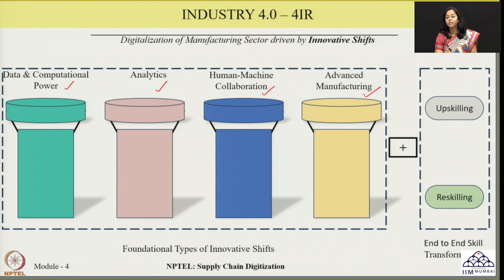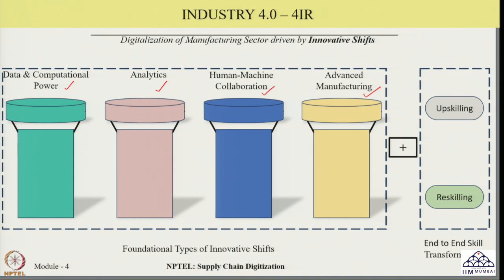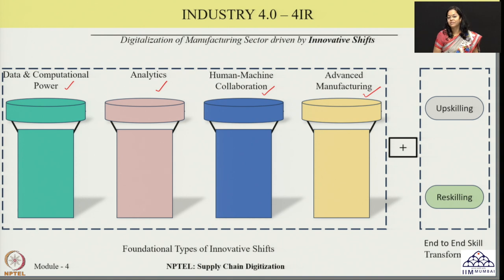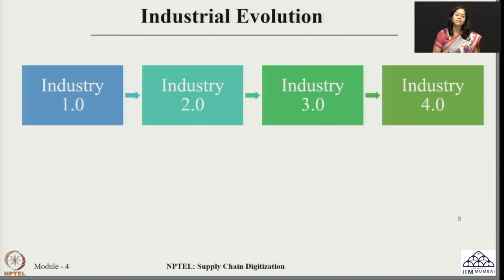This can be achieved with the help of Industry 4.0 or the fourth industrial revolution. We have seen these four foundational types of innovative shifts required to implement Industry 4.0 in manufacturing, which include capturing data, improvement in computational power, analyzing the data, improving human-machine collaboration, and seeing how advanced manufacturing technologies can be implemented — together achieving Industry 4.0 through an end-to-end scale transformation, done either through upskilling or reskilling. Going forward, let us try to understand this fourth industrial revolution — where it has come from and what is the history behind that.